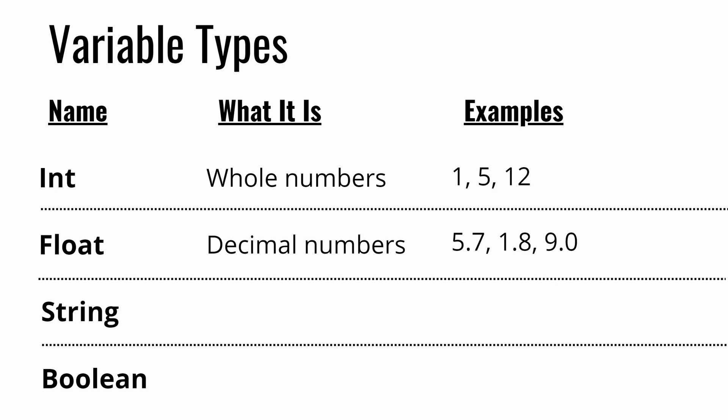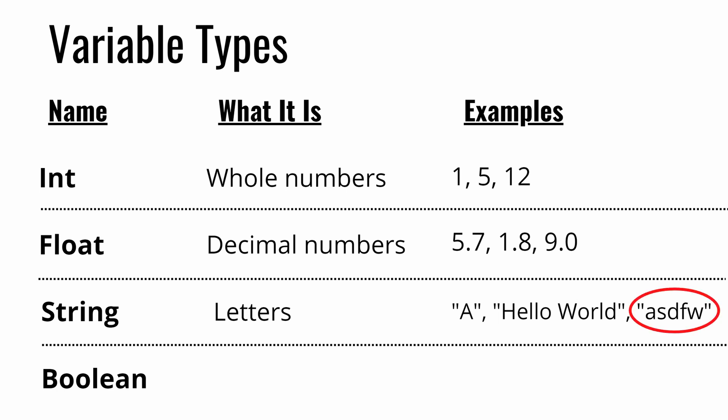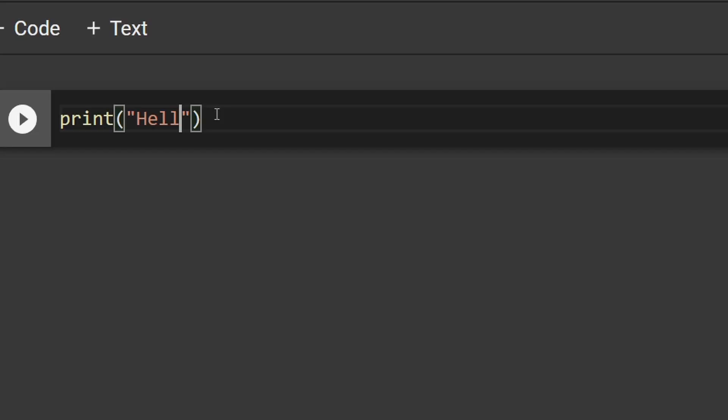A string is any combination of letters. Examples of strings would be the letter A, a whole sentence like 'Hello, my name is Austin', or 'Hello, world', or even just random letter gibberish. In Python, and in most other languages, we always surround strings with either double quotations or single quotations. That's why, if you remember in the last episode, when we typed print, we used quotations to type 'Hello, world', because Hello, world is a string.